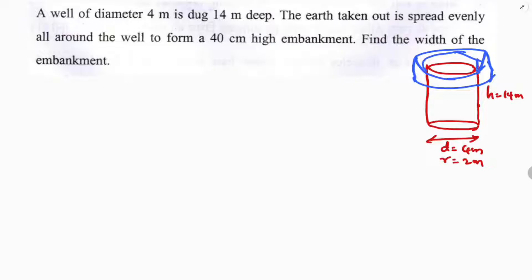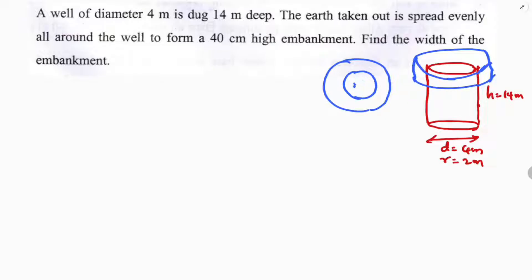We need to find the width of the embankment. If you see from the top view, it will look like this — the embankment forms a ring around the well. The small radius of the well is 2 meters, and the width I will consider as x.